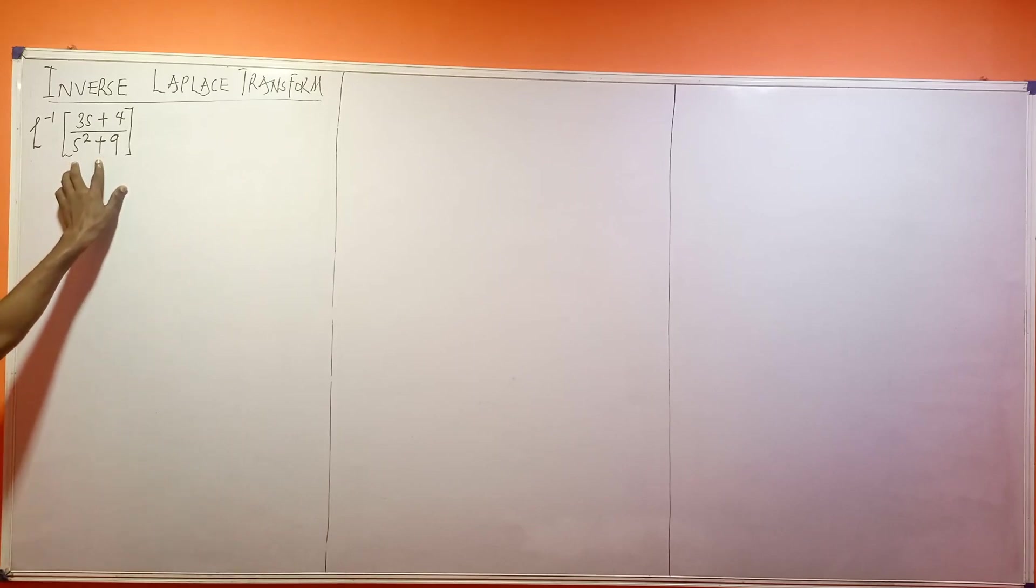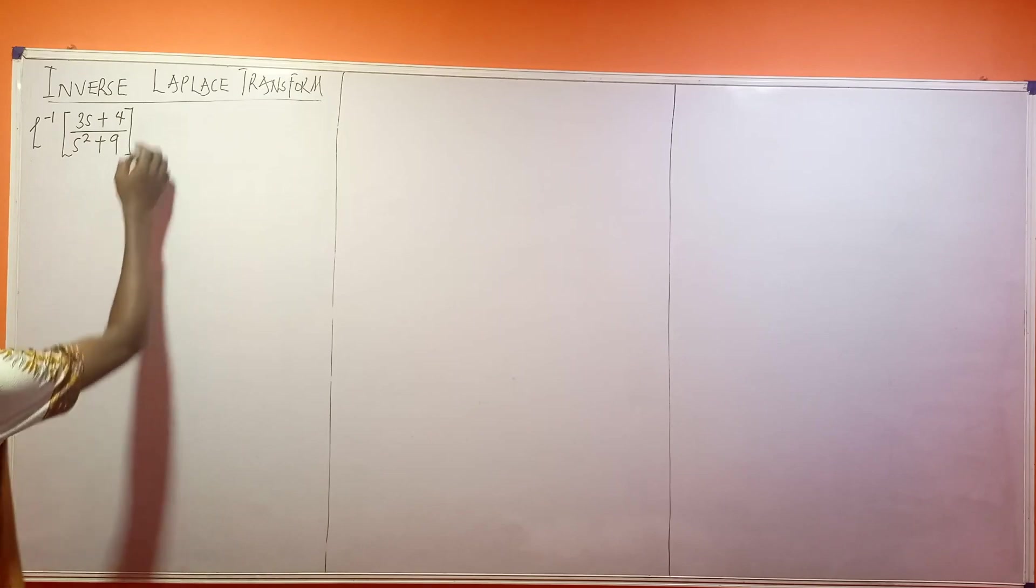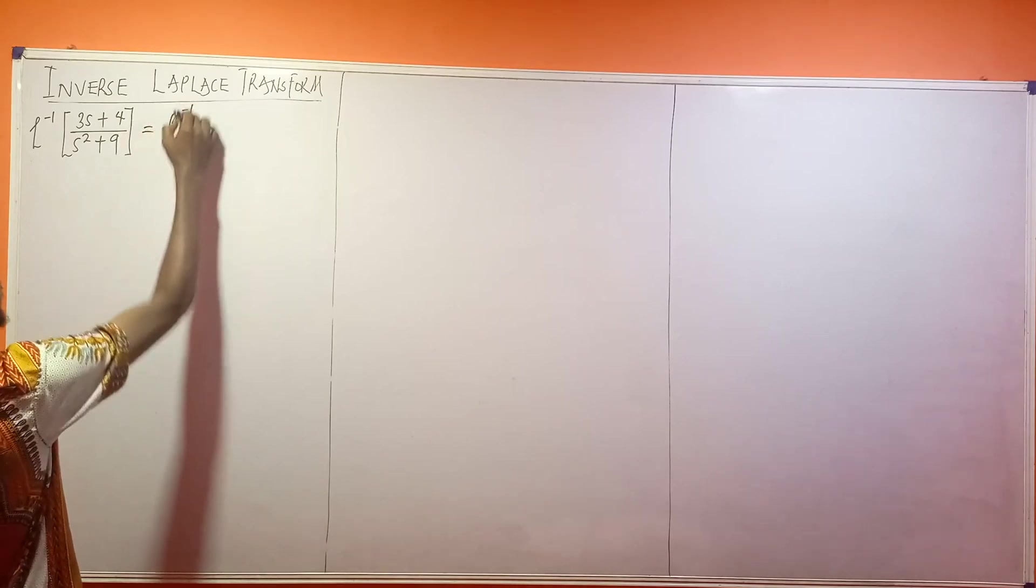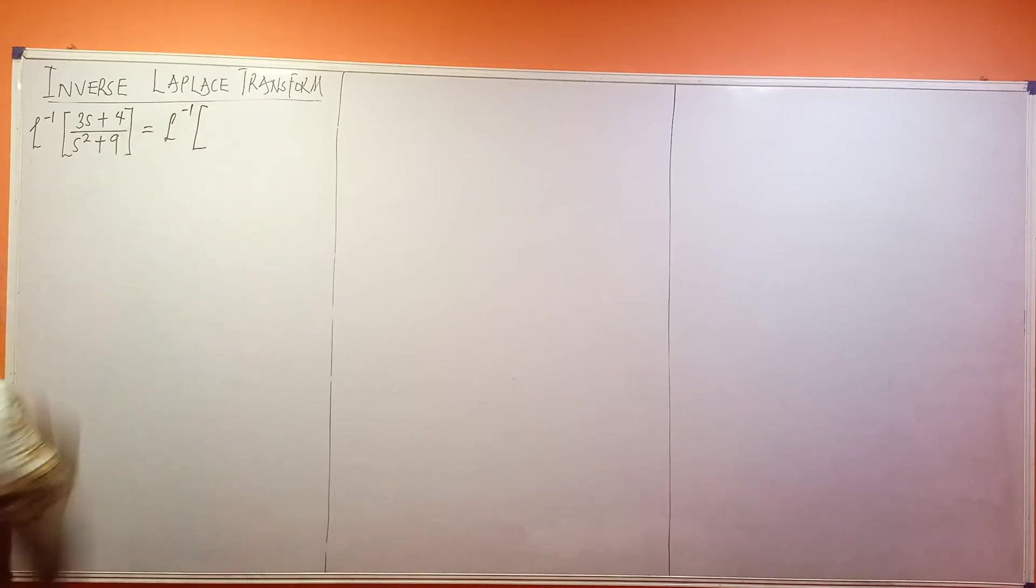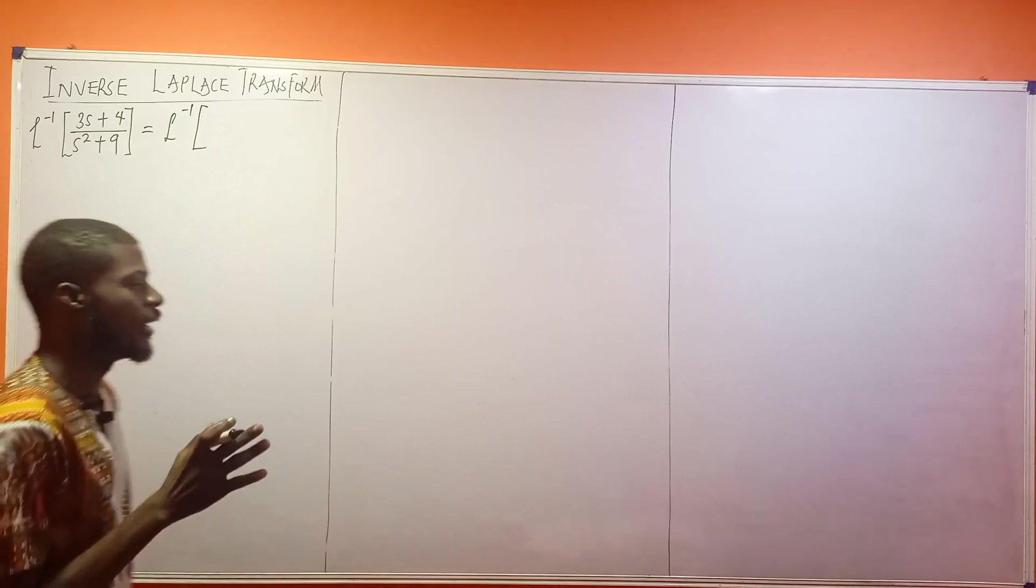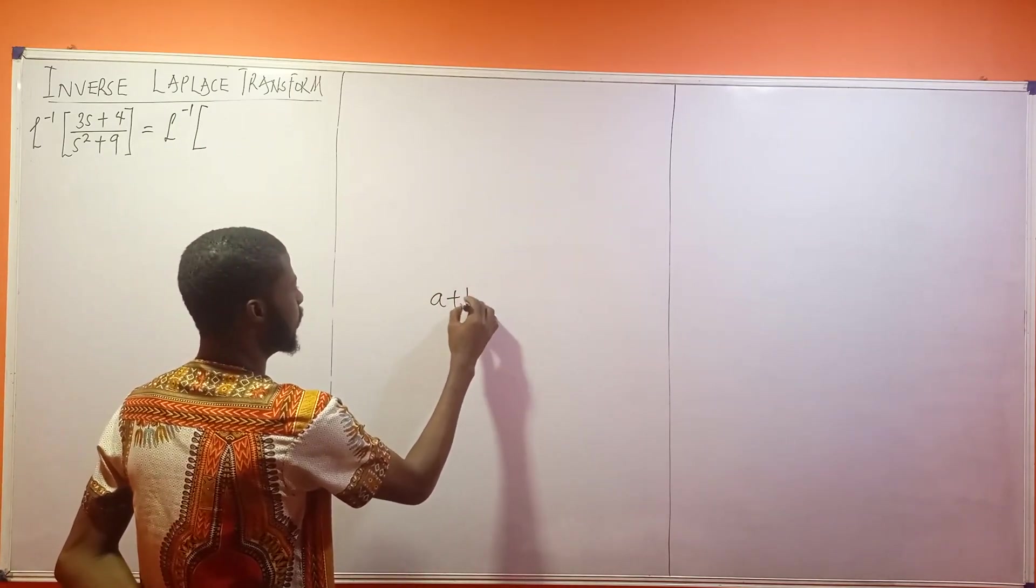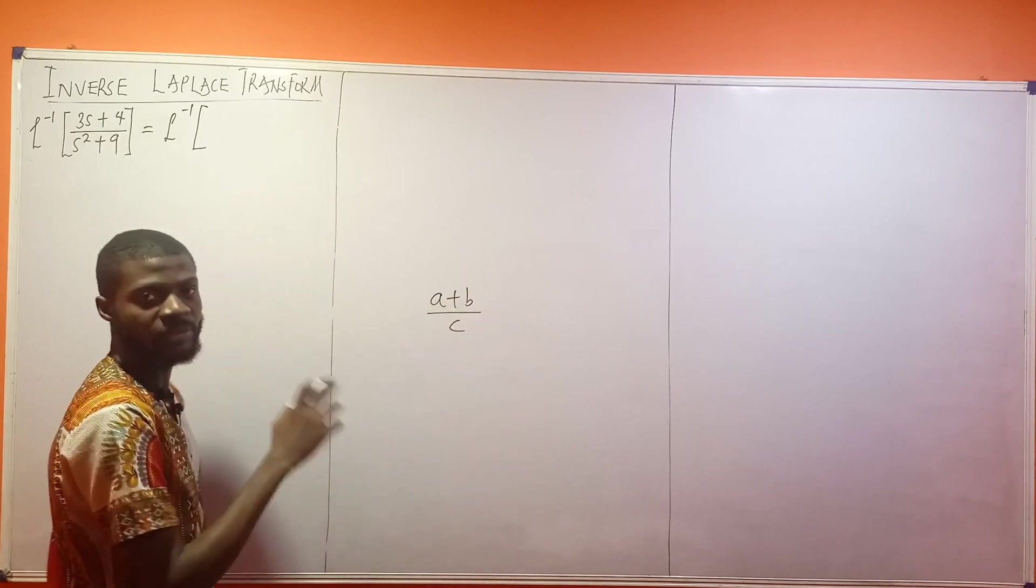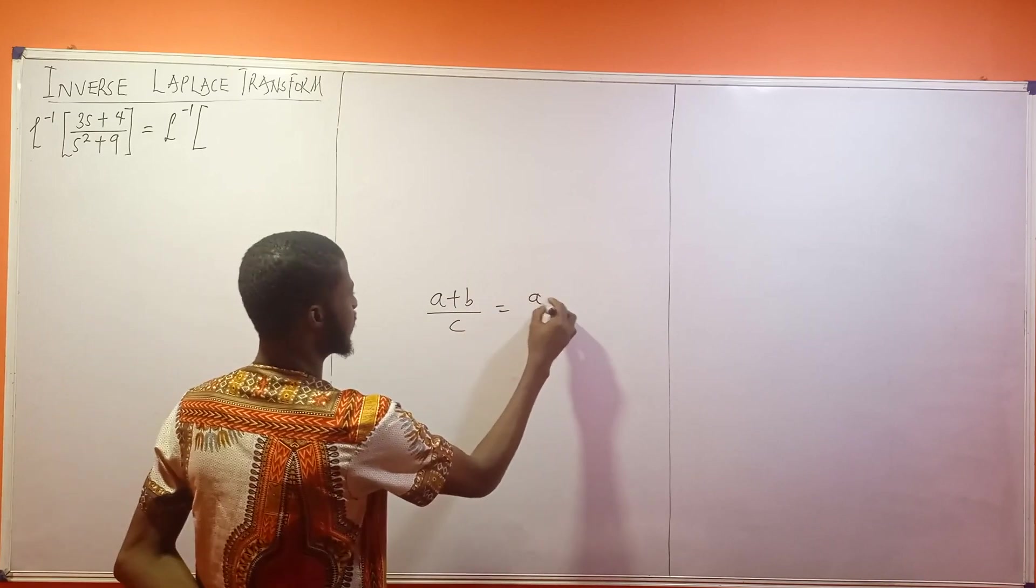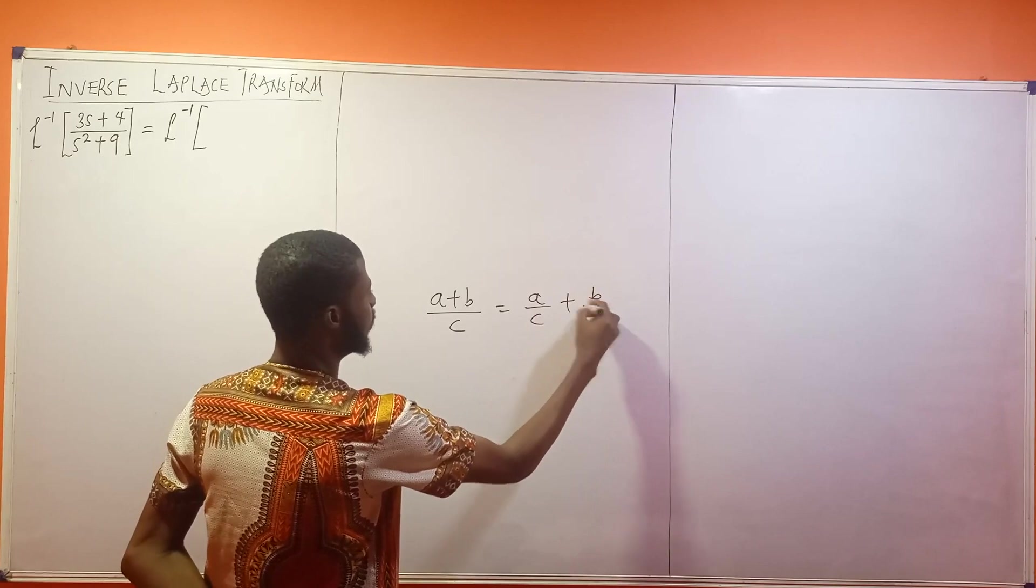Since this denominator cannot be factorized, this can actually become the inverse Laplace of, look at the numerator. Remember in algebra, if you have a plus b over c, this can actually be rewritten as a over c plus b over c.